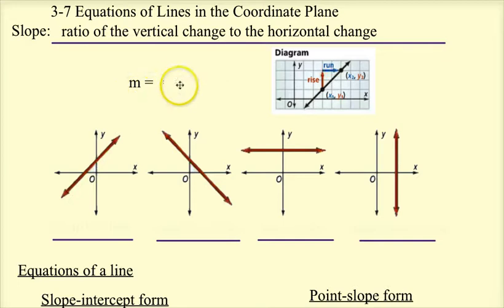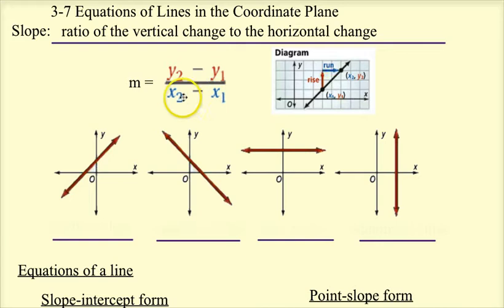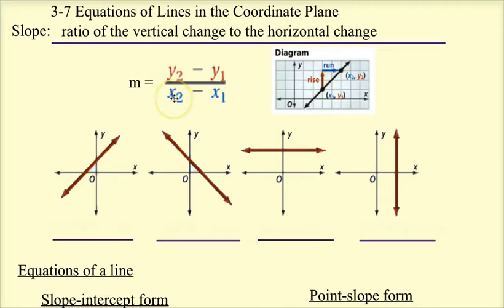We use the letter m for slope, so whenever you want to find slope, you can just write m. Slope is the change in y — take the y-coordinates and subtract them — over the change in x, and on the bottom you subtract the x-coordinates. So the formula is m = (y2 - y1) / (x2 - x1). It doesn't matter which y you start with, but whatever y you start with, you have to start with the same x-coordinate.